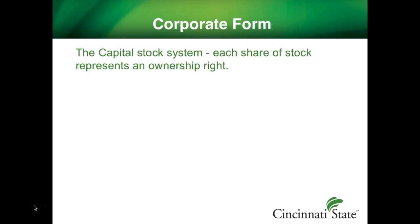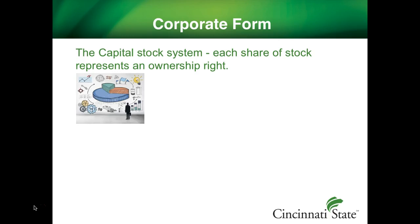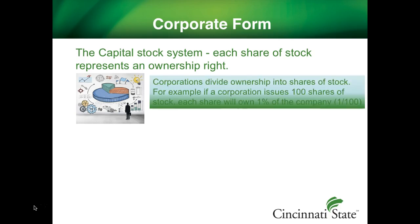Corporations divide ownership into shares of stock. Under the capital stock system, each share of stock represents an ownership right with the following privileges: to share proportionately in profits and losses, in management voting rights, sharing corporate assets upon liquidation, sharing any new issues of stock in the same class, and preemptive rights.